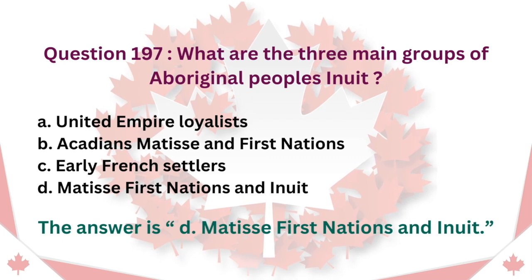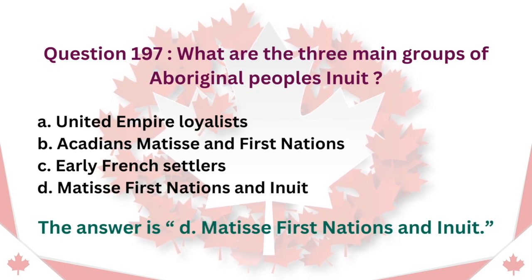Question 197: What are the three main groups of Aboriginal peoples? A. United Empire Loyalists. B. Acadians, Métis and First Nations. C. Early French Settlers. D. Métis, First Nations and Inuit. The answer is D. Métis, First Nations and Inuit.